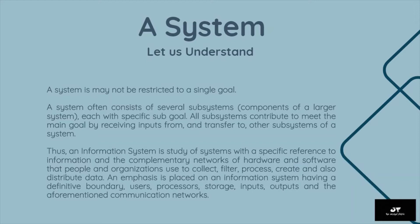An information system is the study of systems with a specific reference to information, and the complementary networks of hardware and software that people and organizations use to collect, filter, process, create, and distribute data. An emphasis is placed on an information system having a definitive boundary, users, processors, storage, inputs, outputs, and the aforementioned communication networks.